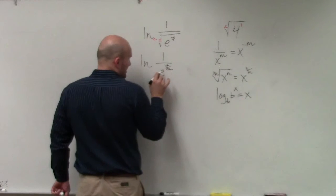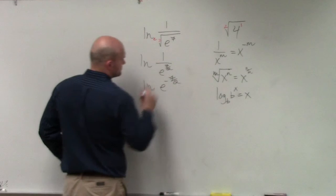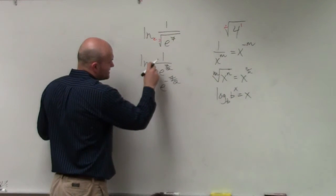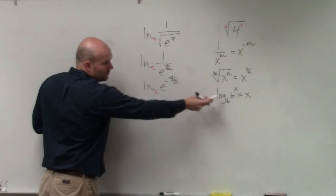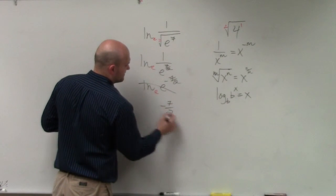Now I want to get this off the denominator. So I have ln of e to the negative 7 halves. Remember, that is a base e. So now, using this rule, my answer is negative 7 halves.